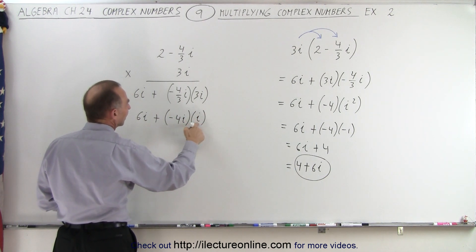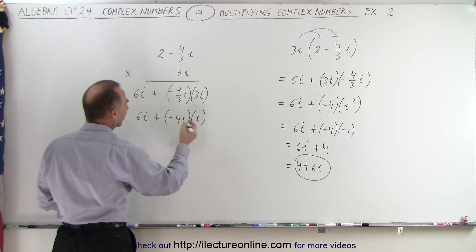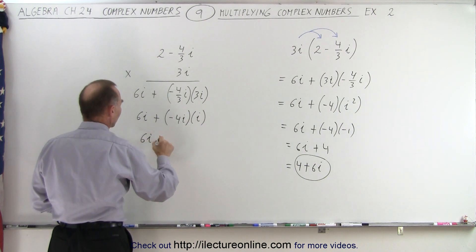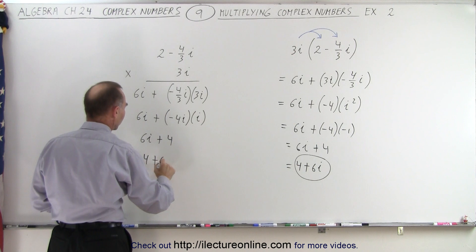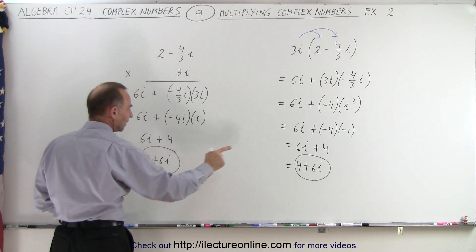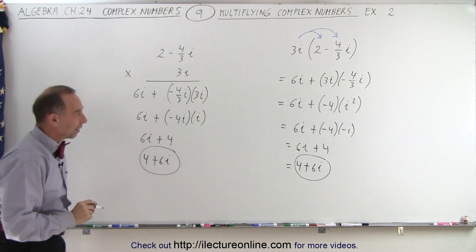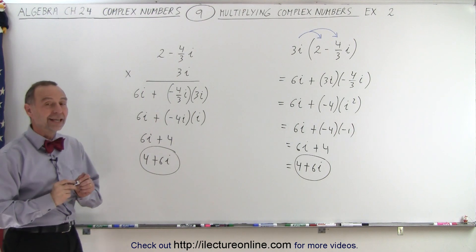And of course, i times i is negative 1, times a negative 4 is a positive 4, so this is 6i plus 4, or 4 plus 6i, which is the same thing that we got on the right side of the board. And that is how it's done.